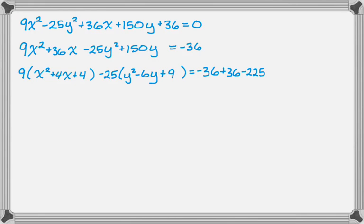And now I'm going to finish completing the square here. So x squared plus 4x plus 4, that factors into x plus 2 quantity squared. So it's the coefficient of the linear term divided by 2, so it's x, and then 4 over 2 is 2, so x plus 2 quantity squared. And then minus 25, this will be y minus 3 quantity squared, and then equals negative 225.